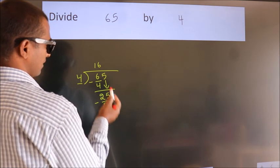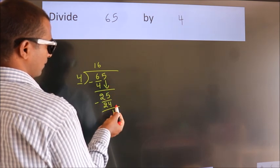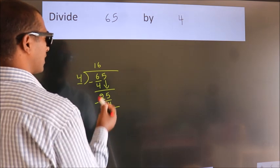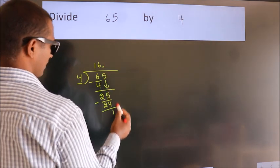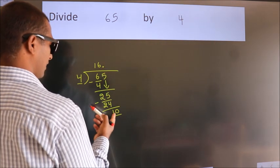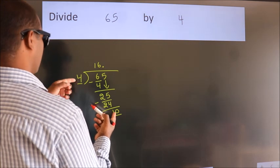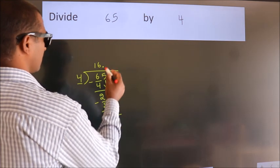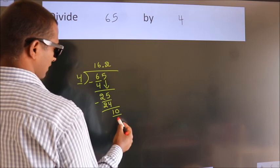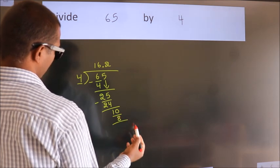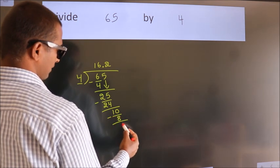After this, no more numbers to bring it down. So what we do is, we put dot take 0. So 10. A number close to 10 in 4 table is 4 twos 8. Now we subtract. We get 2.